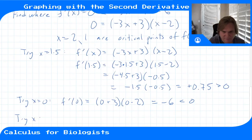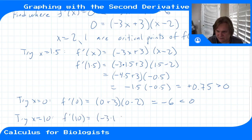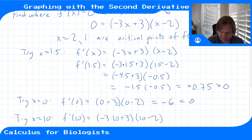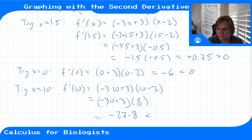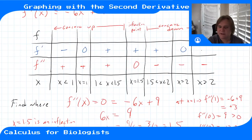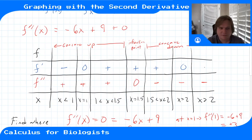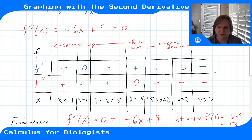For x > 2, try x = 10: f'(10) = -3(10-1)(10-2) = -3(9)(8), which is a large negative number. So for x > 2, f' is always negative. Summary: f' is negative for x < 1, positive for 1 < x < 2, and negative for x > 2.